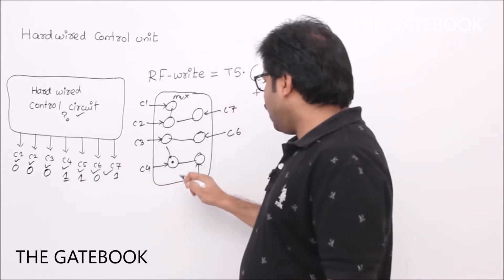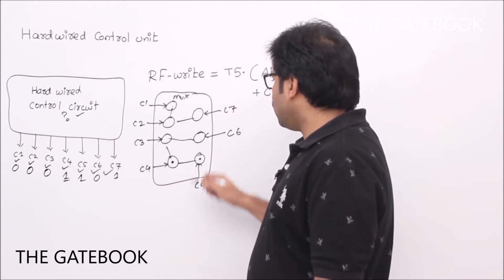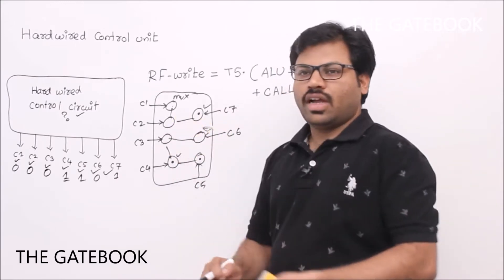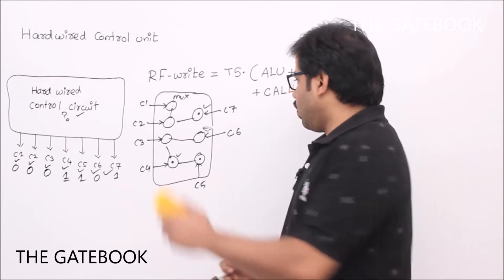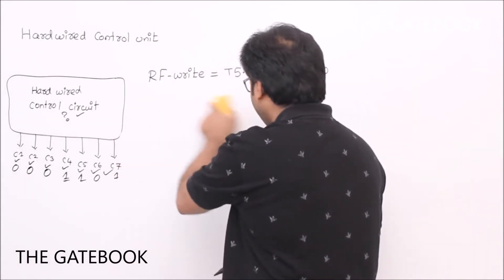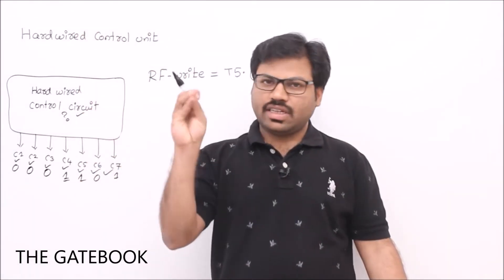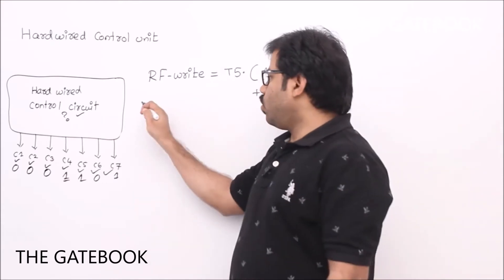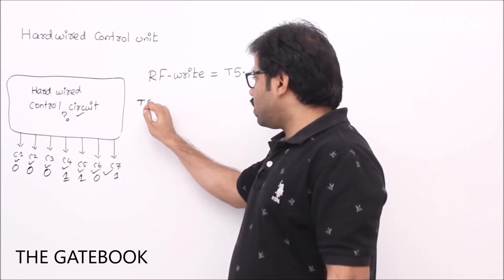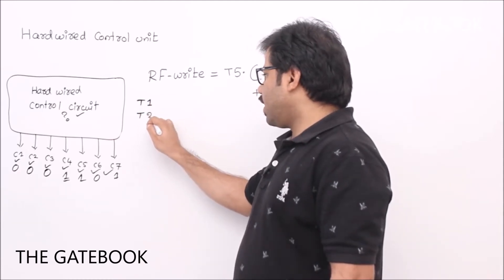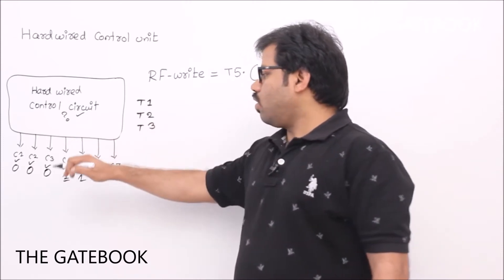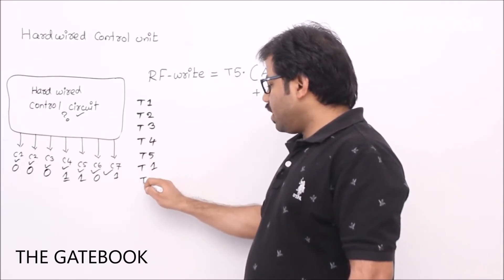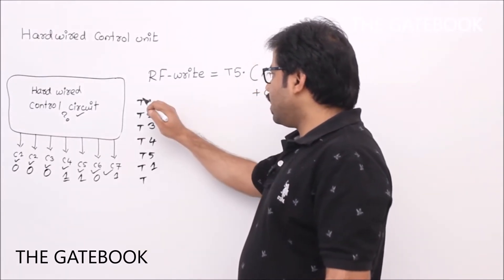Similarly, c5 is 1, c4 is 1, c6 is 0, c7 is 1 — these will perform the desired operations. So appropriate control signals are generated by your hardwired control unit as time proceeds. Whenever you start the system, that will be time one, the first clock cycle, then second clock cycle. For every clock cycle, control signals will be generated: t1, t2, t3, t4, t5, then back to t1, t2 — because it's a cycle.